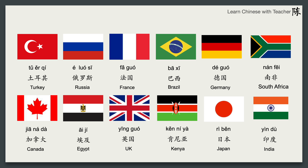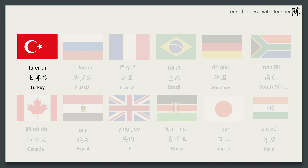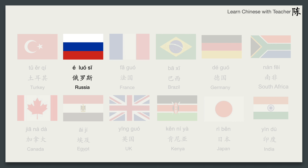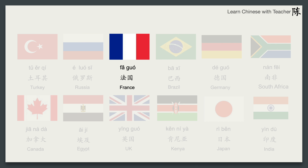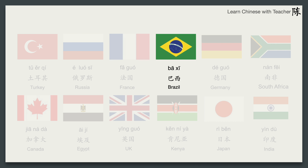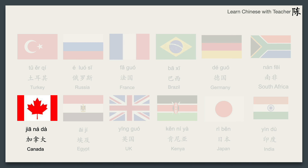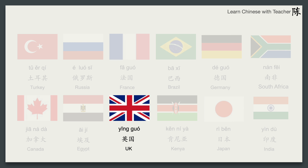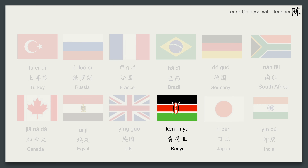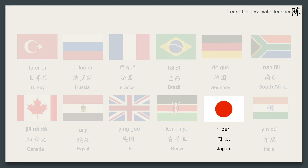Now we'll learn country names and their people. Please read after me: 土耳其，俄罗斯，法国，巴西，德国，南非，加拿大，埃及，英国，肯尼亚，日本，印度。你来自哪个国家？Please tell me which country you are from and leave it in the comments below.